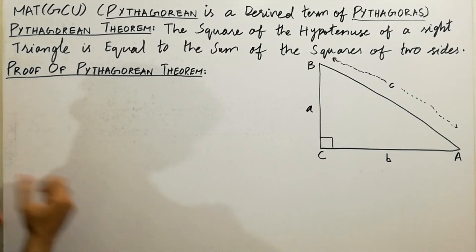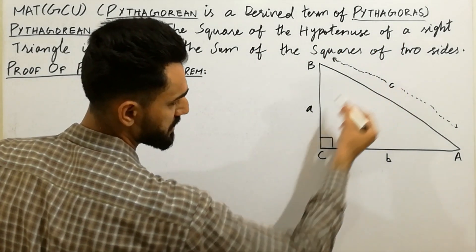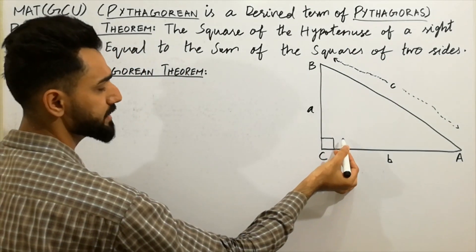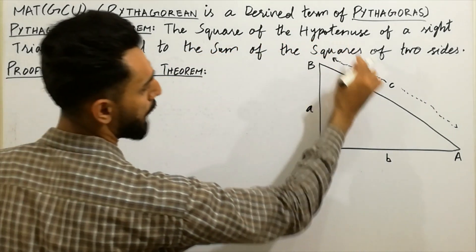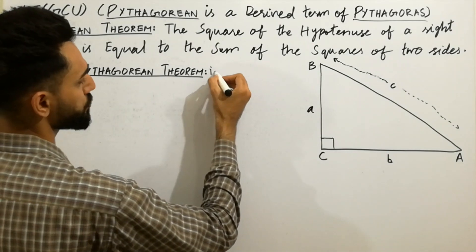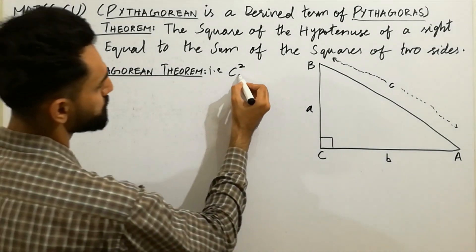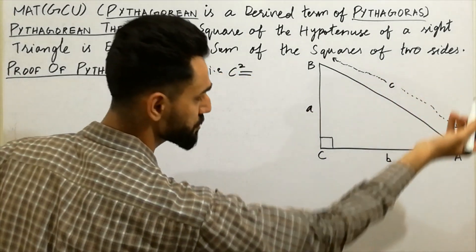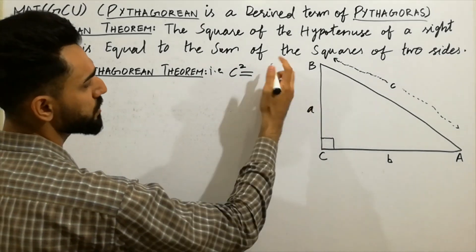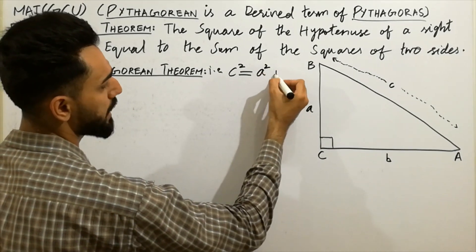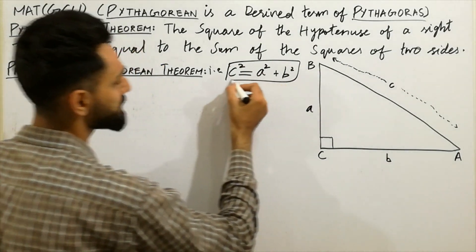Now, what is the Pythagorean theorem? The Pythagorean theorem states that the square of the hypotenuse of a right triangle — in this right triangle which has an angle of 90 degrees — the square of the hypotenuse, which you can write as c², is equal to the sum of squares of the two other sides, a and b. Here a is the perpendicular and b is the base.